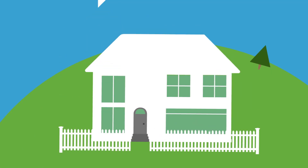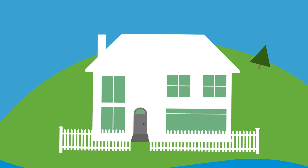Now imagine a second house, 100 metres up a hill from the river. This house is less likely to be at risk from flooding because of its position.